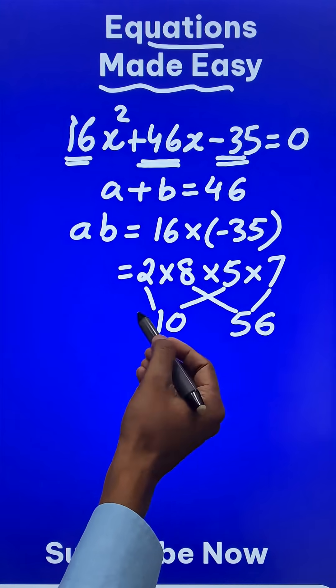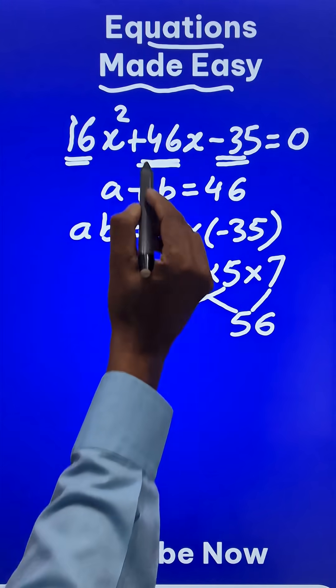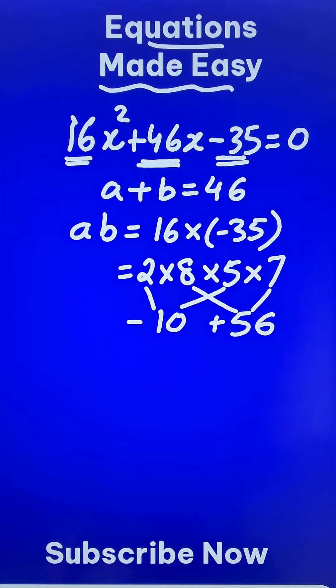You just need to decide on the sign. Here you have plus 46, so the larger one will be positive and the smaller one will be negative.